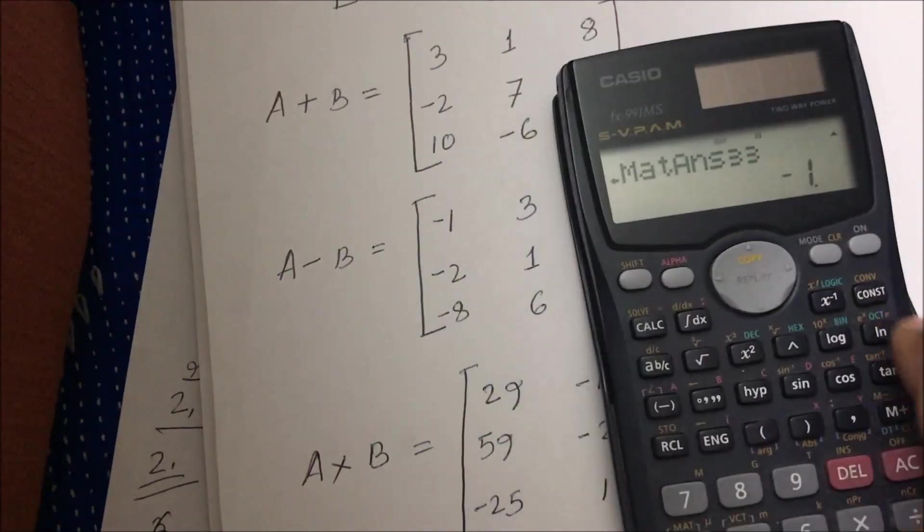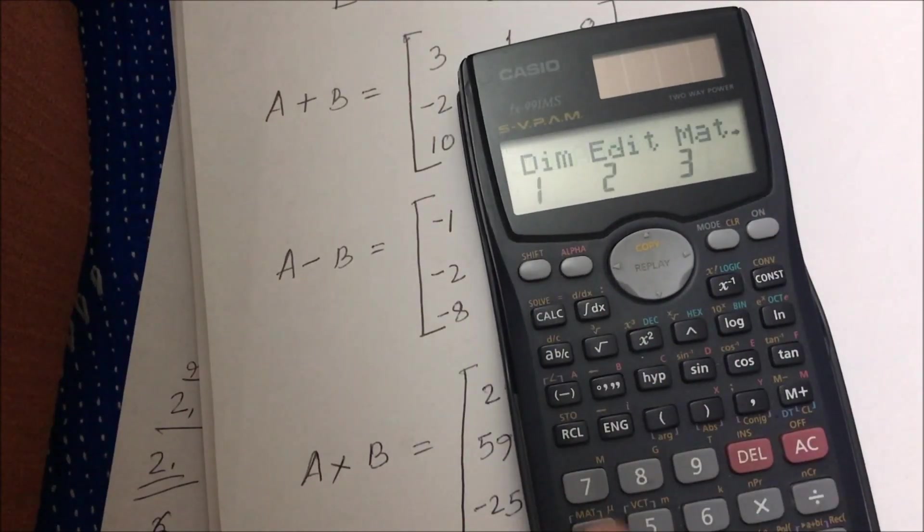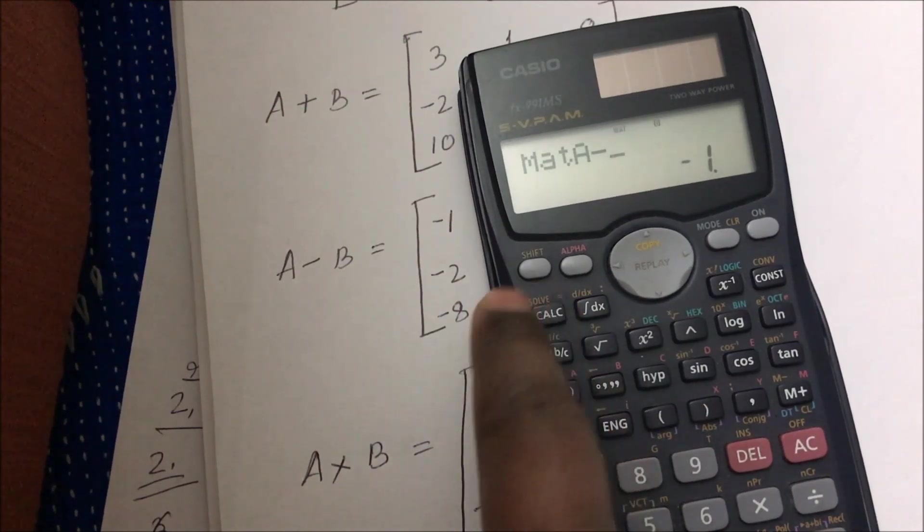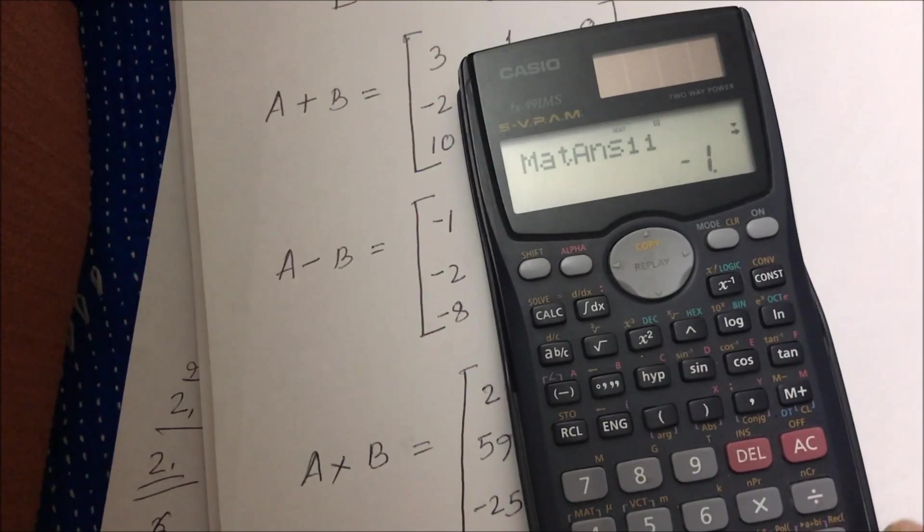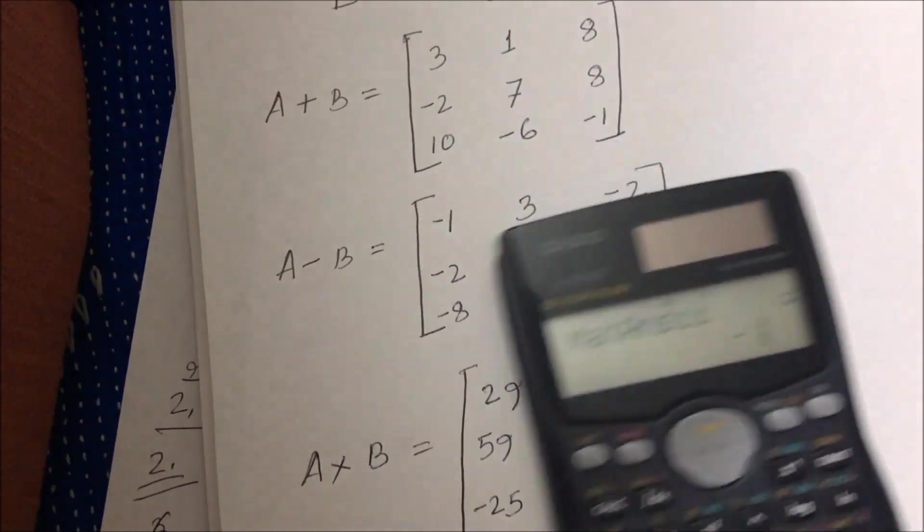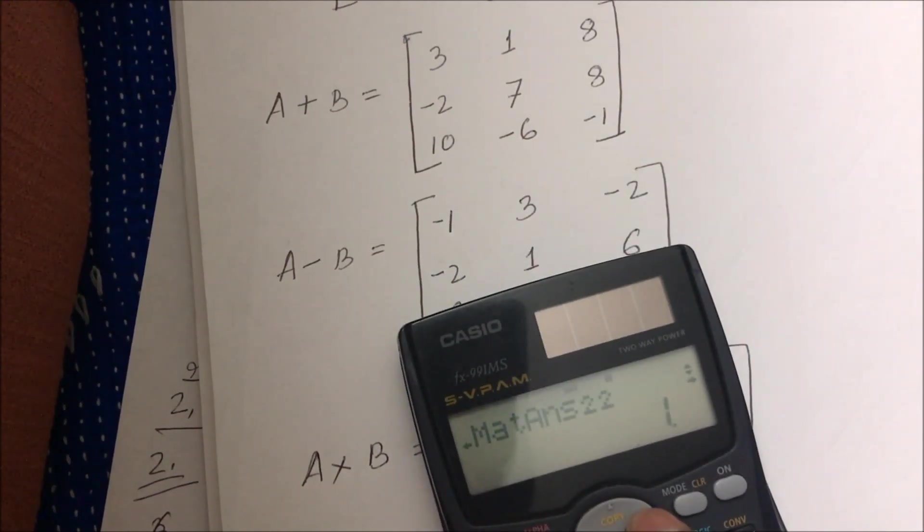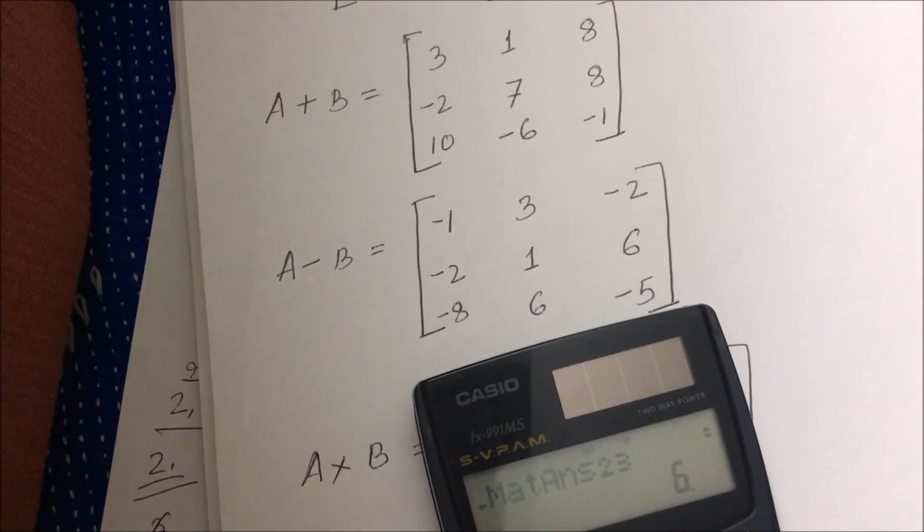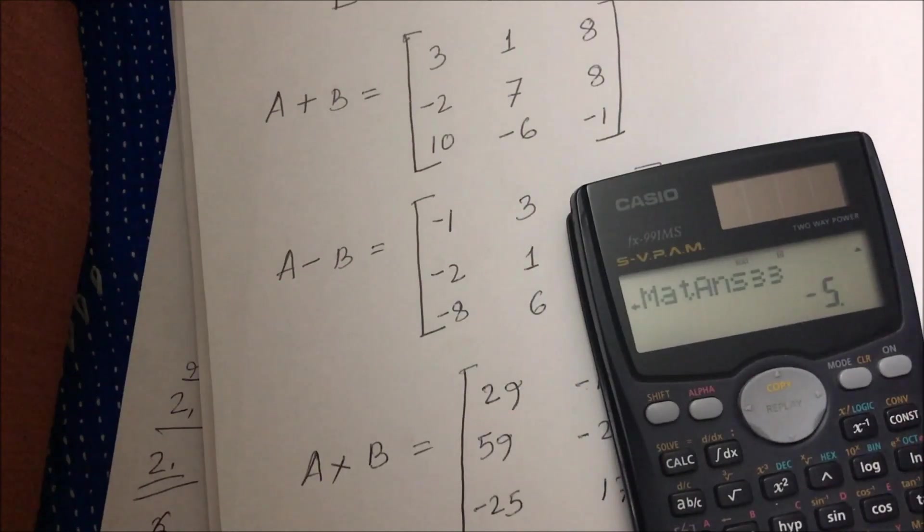Again, if you want to do the subtraction: shift, matrix, 3, 1, minus, shift, matrix, 3, 2. Matrix subtraction, okay. Let's match it: -1, 3, -2, -2, 1, 6, -8, 6, -5. Excellent.